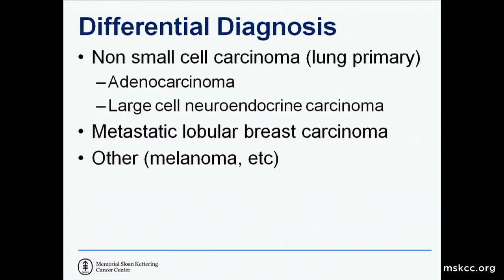The differential diagnosis was either a new lung primary or metastasis from her prior breast carcinoma. Given the morphology, if it was a metastasis, it would make the most sense that it would be a lobular carcinoma. There are other things in the differential, but we'll leave it at these two.